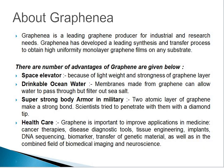There are different advantages of graphene. The first is the space elevator: because of graphene's light weight and strength, it can be used in space elevators. The second is drinking ocean water: membranes made from graphene can allow water to pass through but filter out sea salt. One group of researchers found that graphene is highly effective at filtering seawater. Next is super-strong body armor in the military: two atomic layers of graphene make a very strong barrier. Scientists tried to penetrate it with a diamond tip but it was not possible, so graphene can be used as body armor.